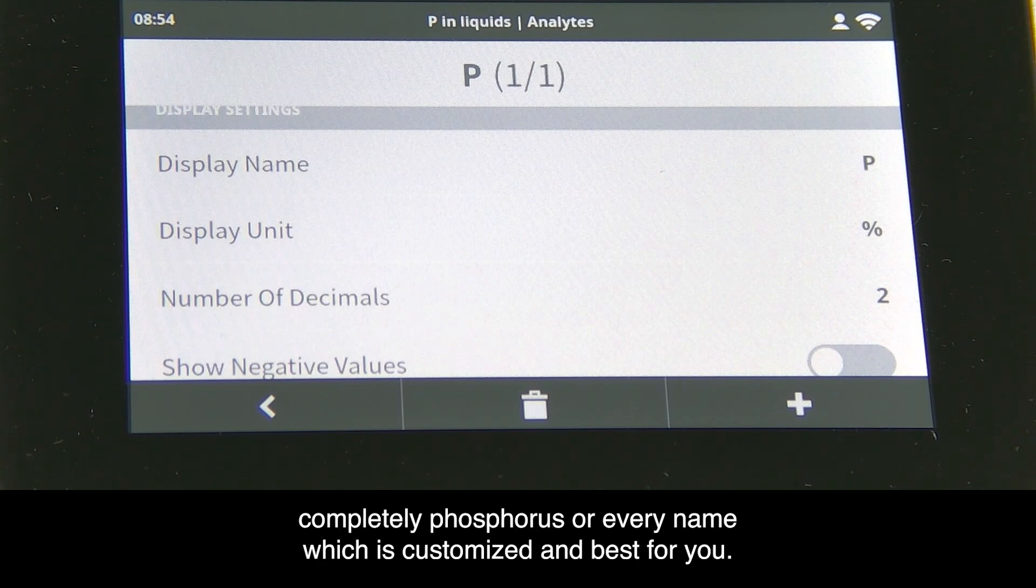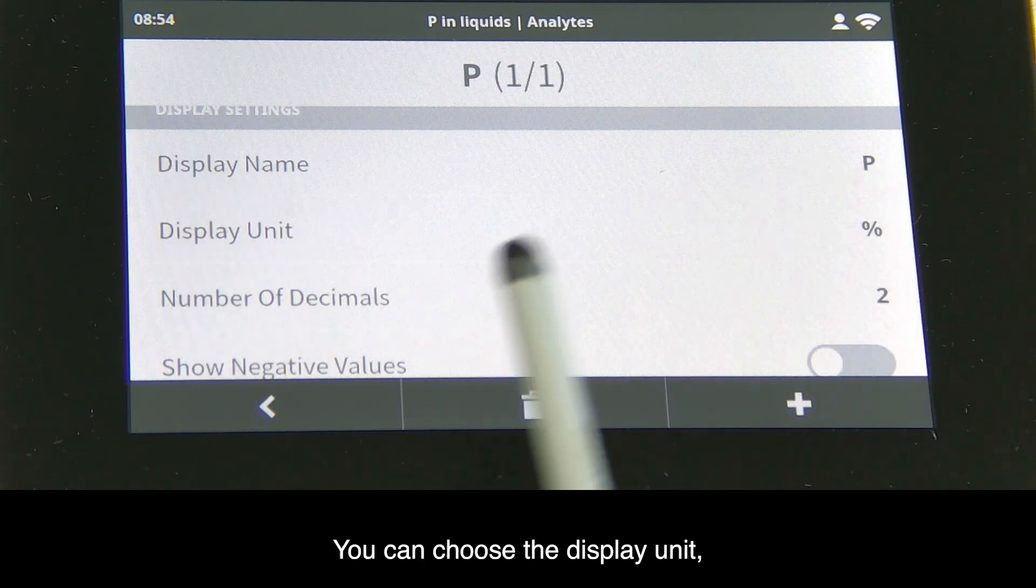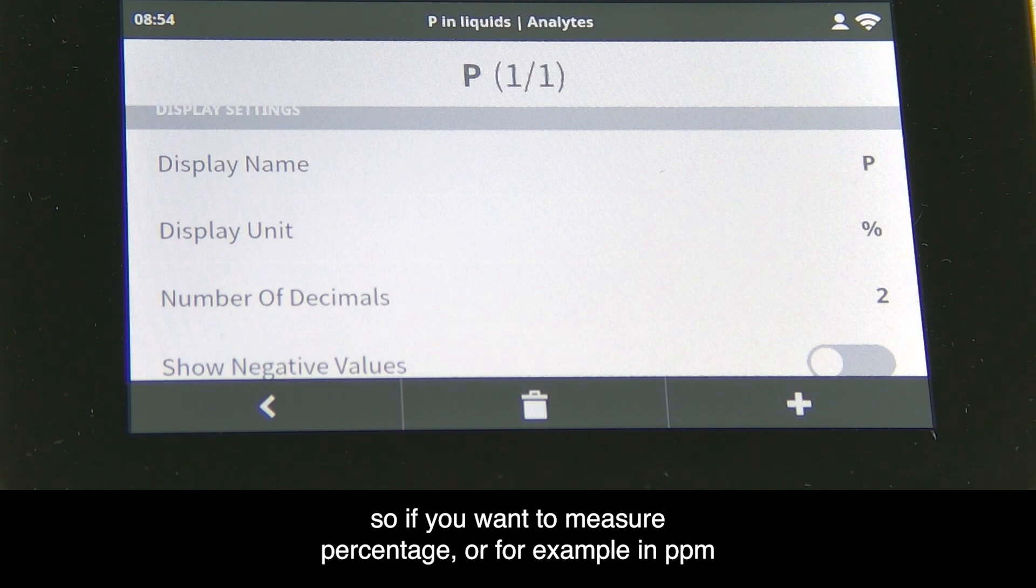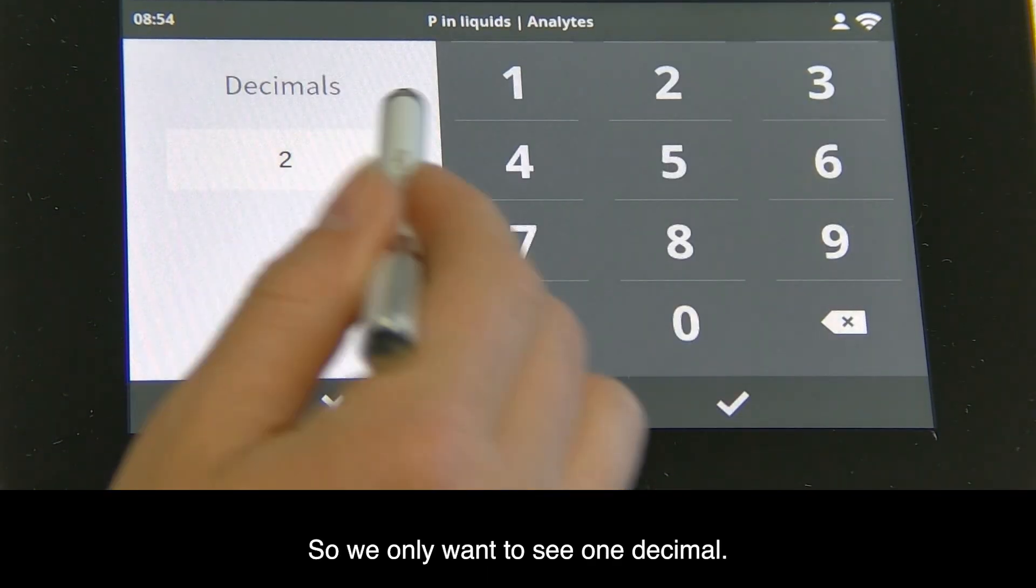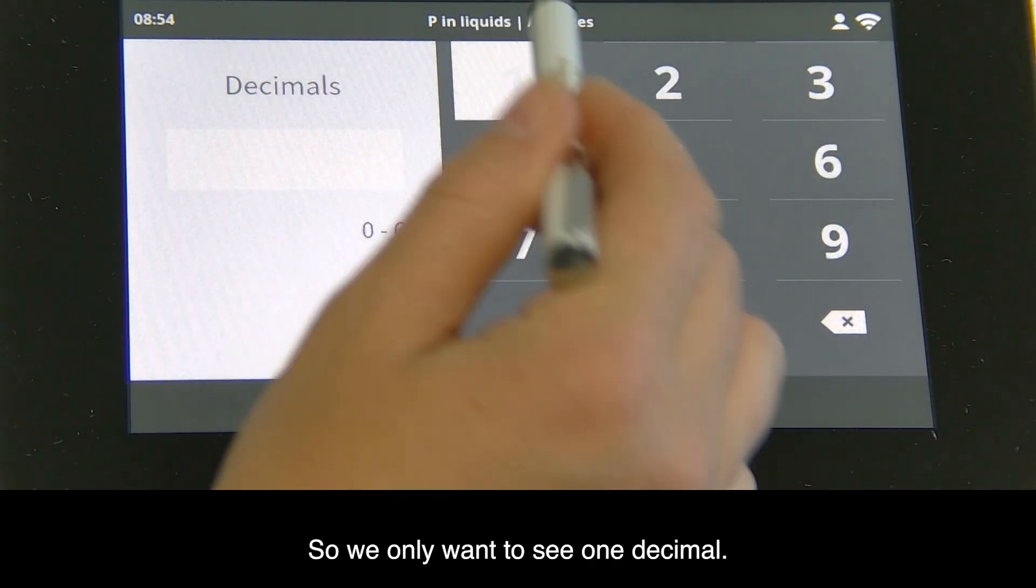You can see only the P or enter the name completely as phosphorus, or any customized name. You can choose the display unit - percentage or ppm - and enter the number of decimals. We only want one decimal.